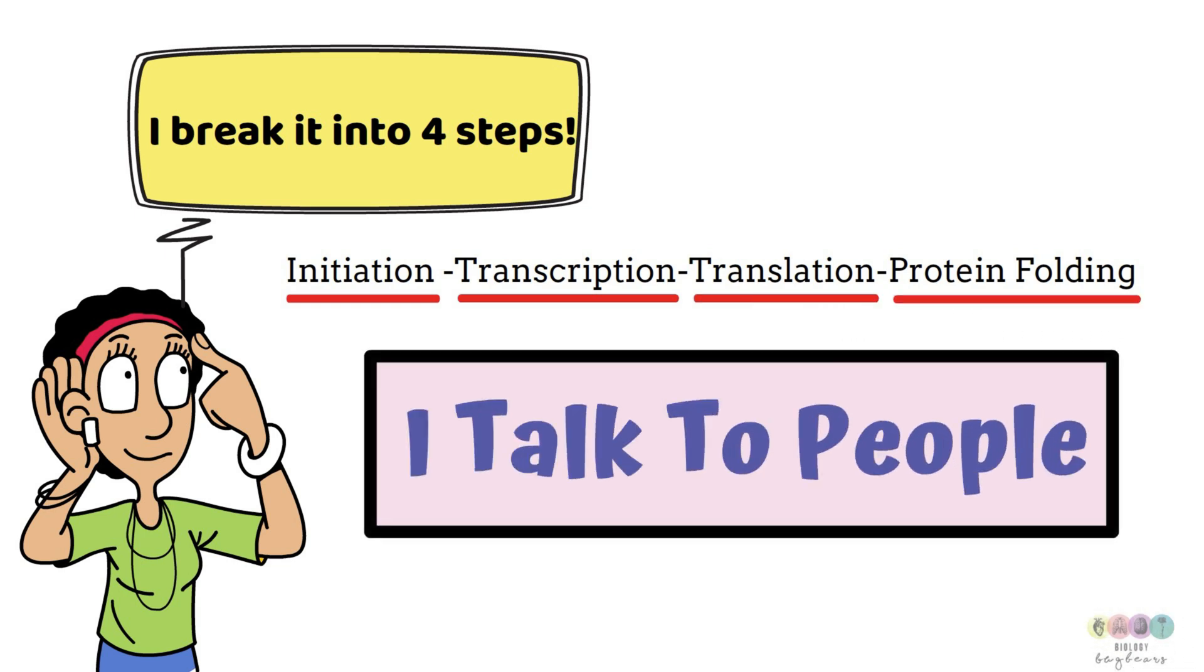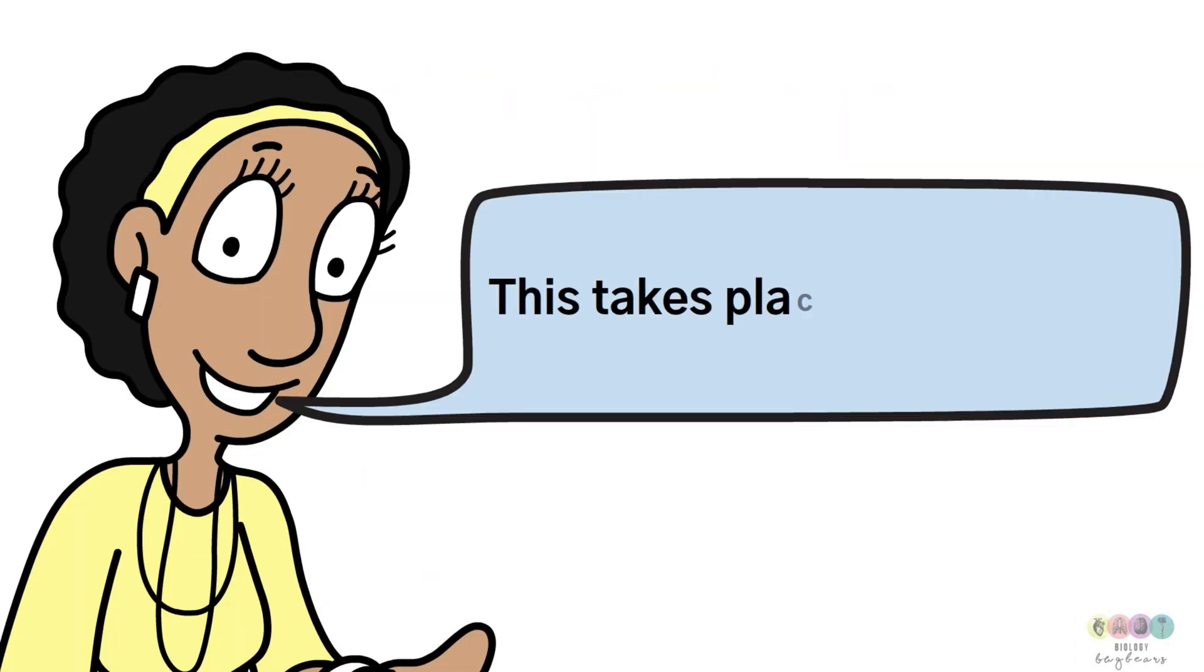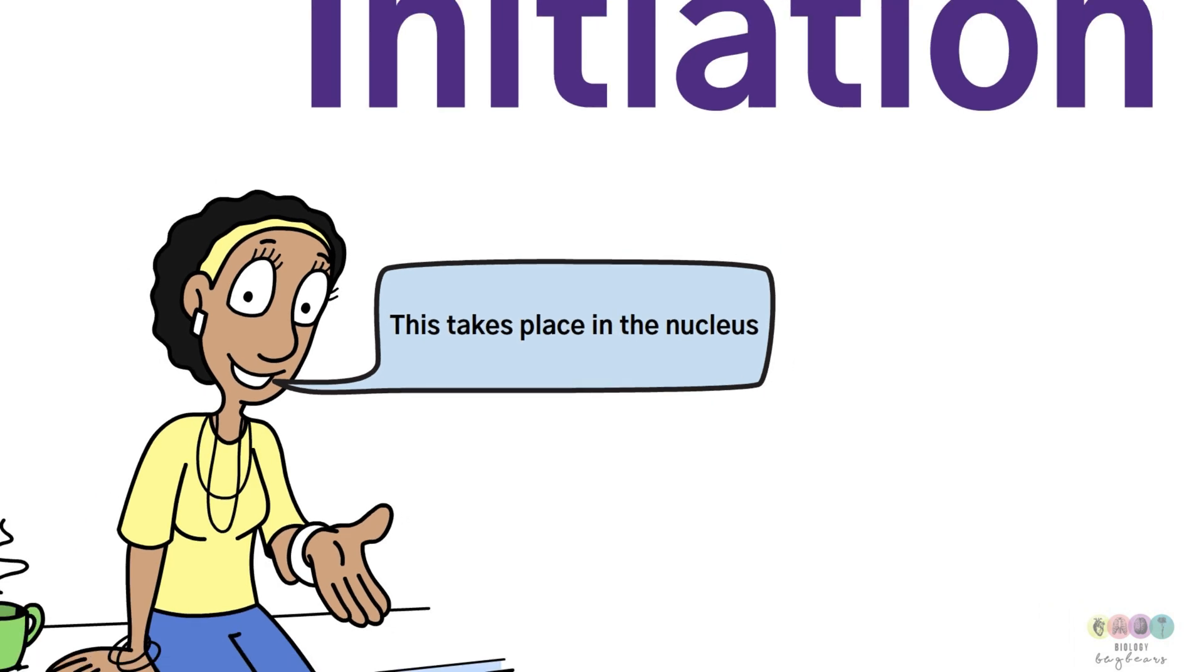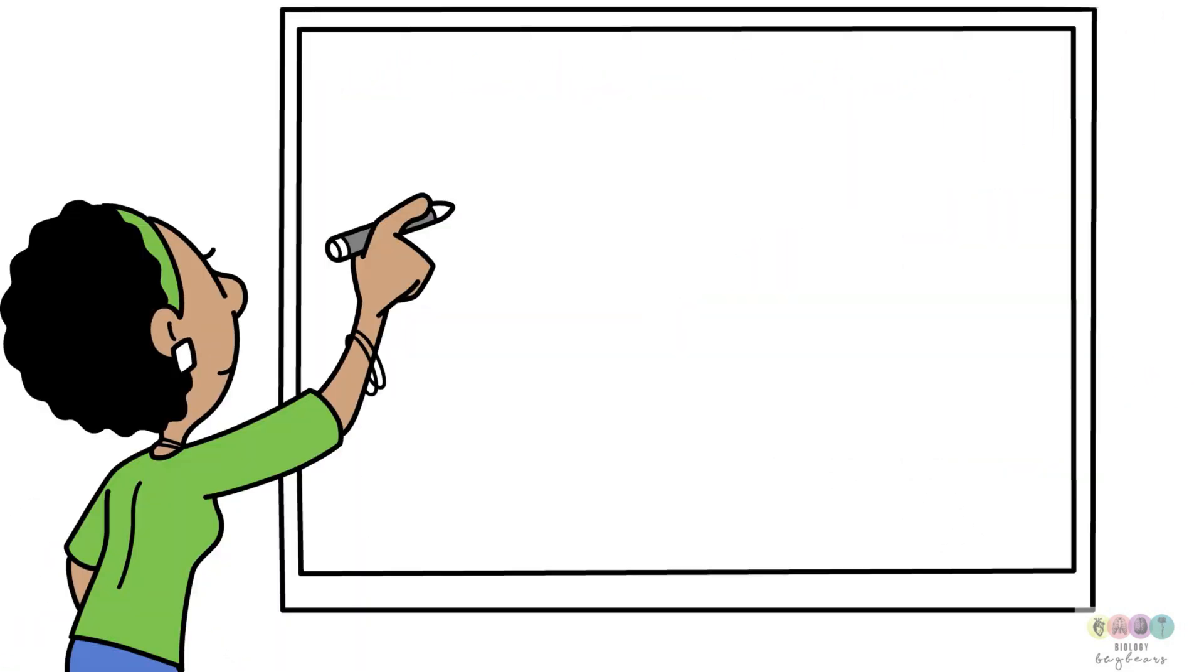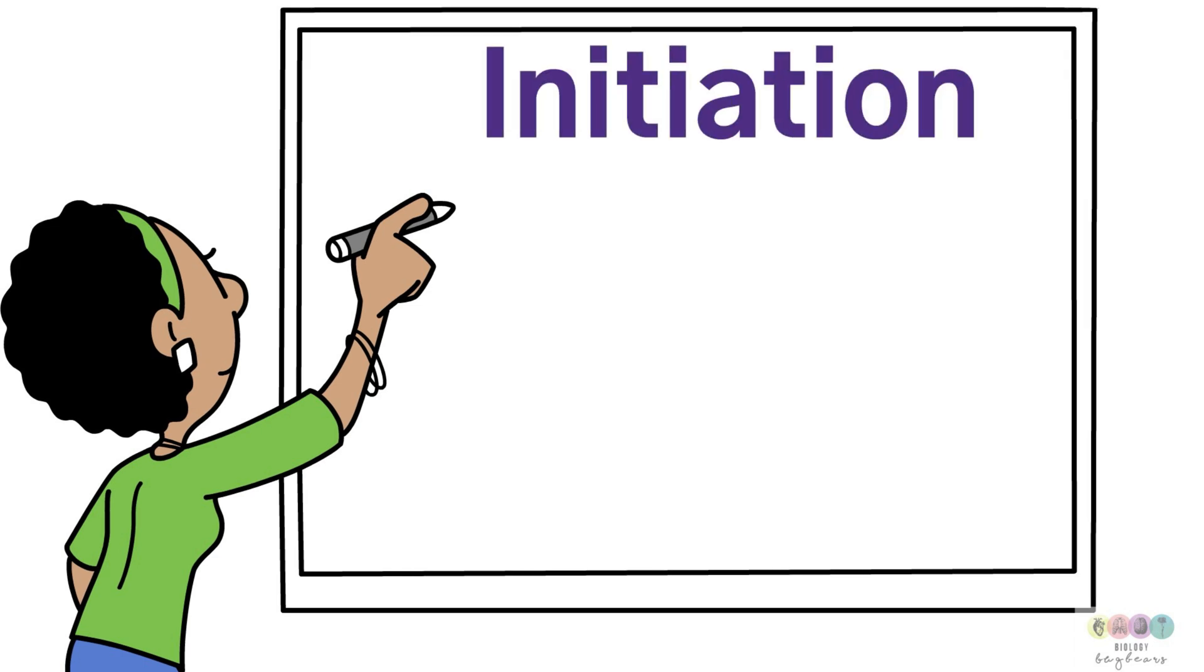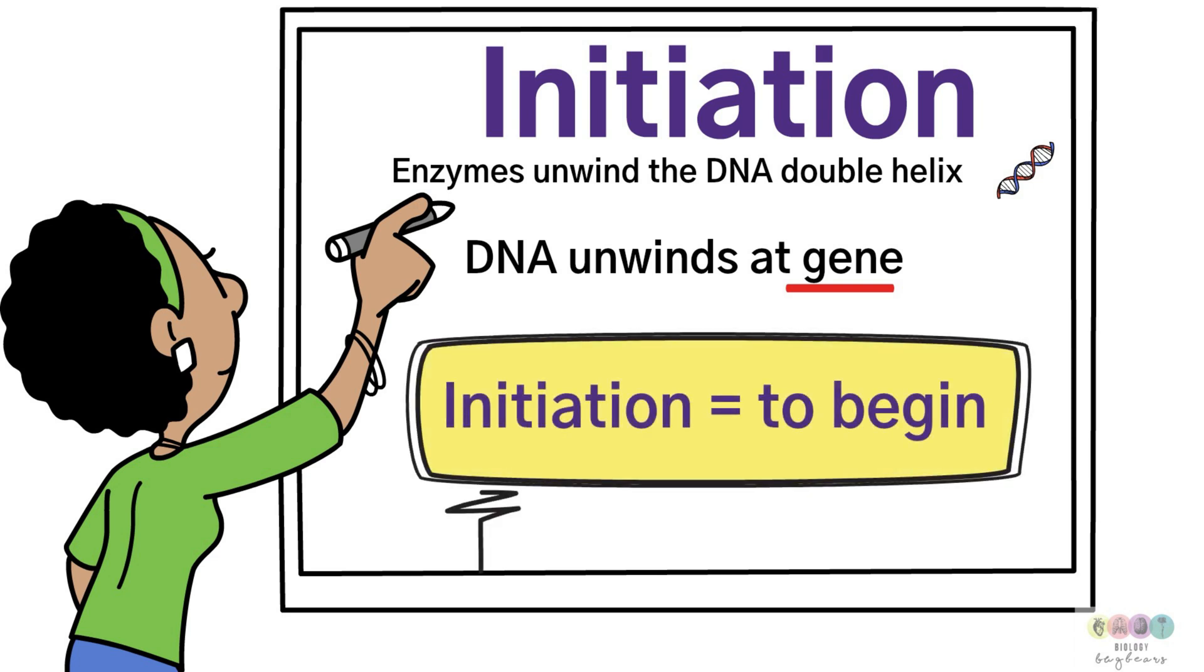Let's deal with initiation. This is taking place in the nucleus of the cell. So when I say nucleus let's imagine a plant and an animal cell. There's the nucleus of both of those cells and this is where initiation is taking place. With initiation the DNA unwinds and it's enzymes that unwind the DNA double helix, unwinding at a particular place at a gene because the whole point of this is to make the protein that that gene codes for.